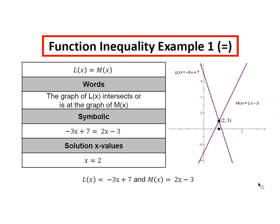When we look at this all together, we say that the graph of L(x) intersects or is at the graph of M(x). Symbolically, we use an equal sign between our two functions, and our solution is the x value x equals 2, this single point where the graphs intersect.